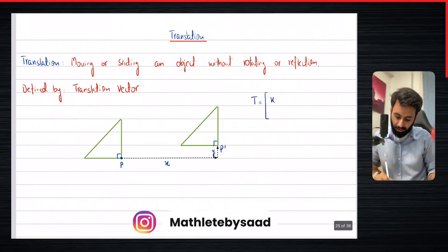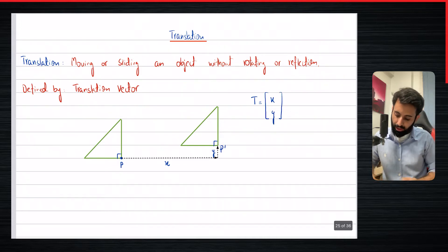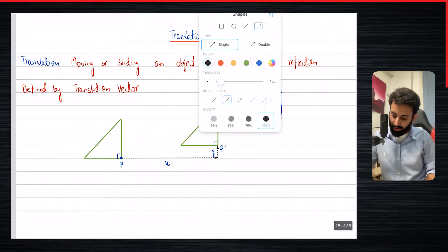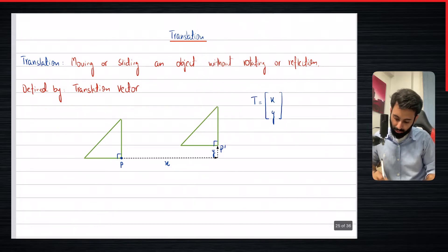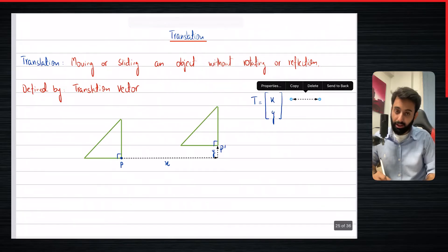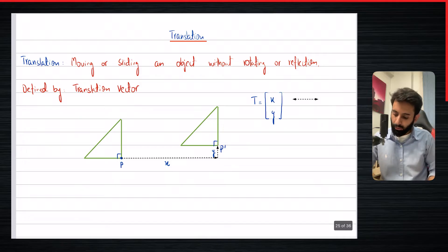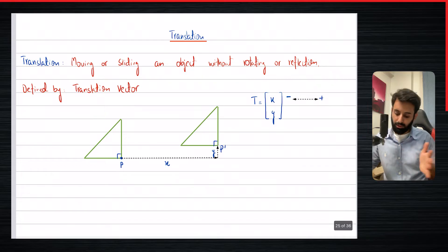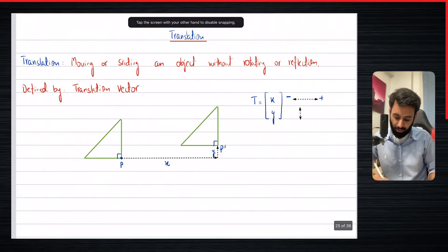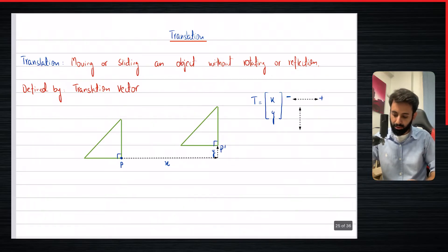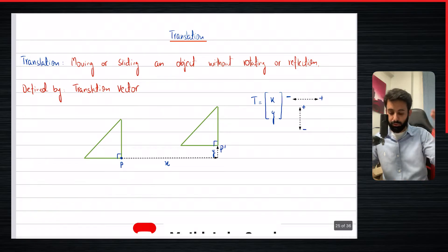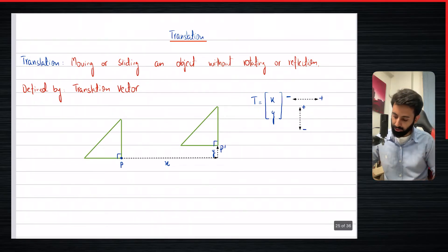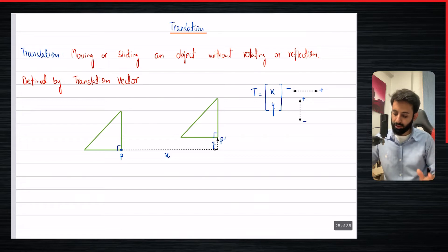The translation vector, represented by the letter T, looks like this: (x, y). Here x decides how much the object moves horizontally. If x is positive, it moves to the right; if negative, it moves to the left. Similarly, if y is positive the object moves upwards; if y is negative, it moves downwards.